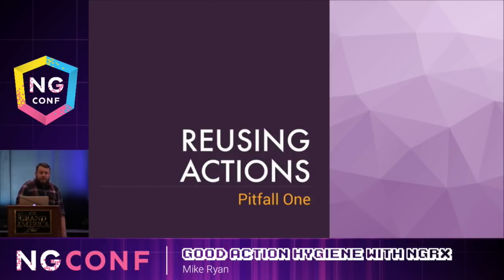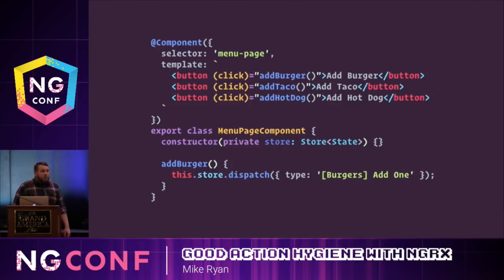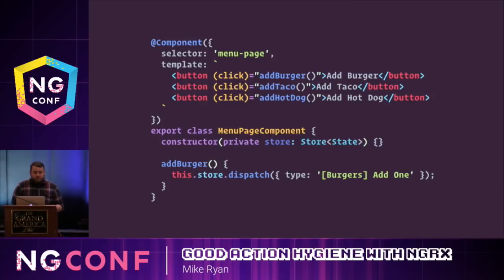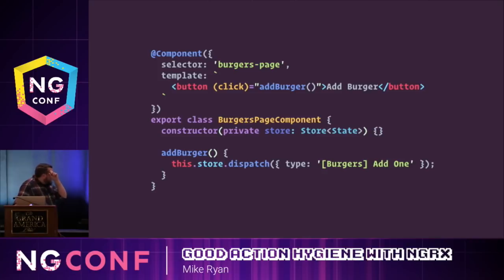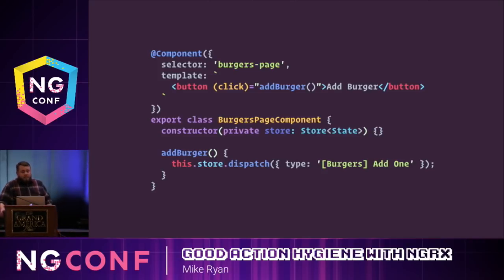The first pitfall is reusing actions. I'm a big fan of food, so I'm writing a menu ordering app to order food items. On my menu details page, I can add any number of items to my cart. So if the user presses the add burger button, I want to dispatch an action — something like 'burgers add one.' But users can also go to the burgers page and do the same thing — add a burger to their cart from the burger details page. And so I want to dispatch the same action, 'burgers add one.'